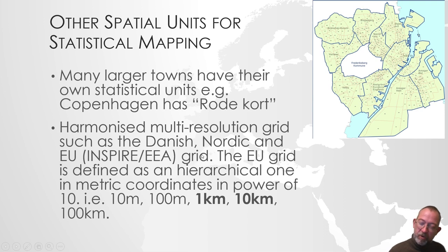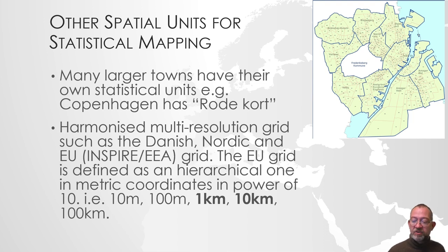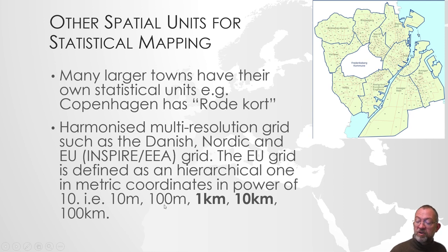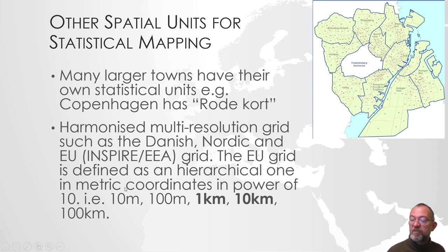Therefore it is becoming more and more common to use what we call harmonised multi-resolution grids — grids that fit into each other. Denmark has a grid that matches the EU grid, and the Nordic countries share the same grid. The coarsest grid cell is 100 by 100 kilometres, then 10 by 10 kilometres, then 1 by 1 kilometre, and at 100 by 100 metres it starts getting very interesting. There's quite a lot of statistics available at 10, 1, and 0.1 kilometre resolutions.